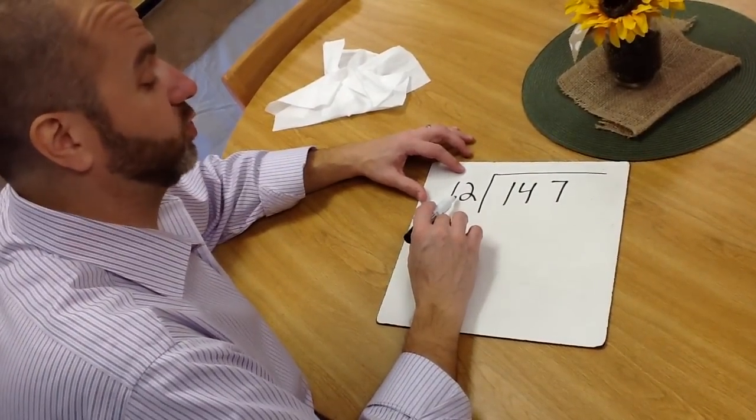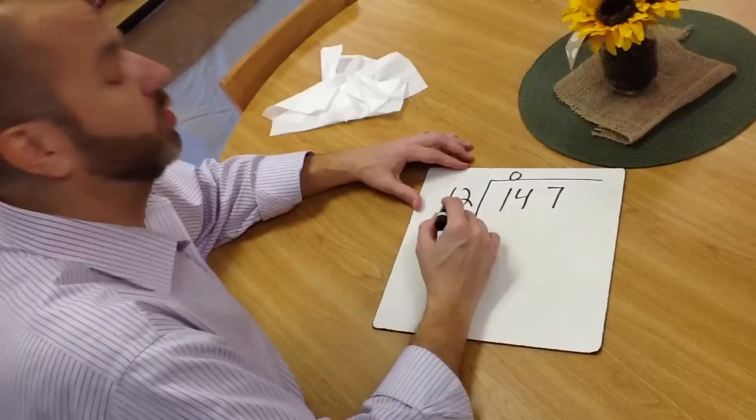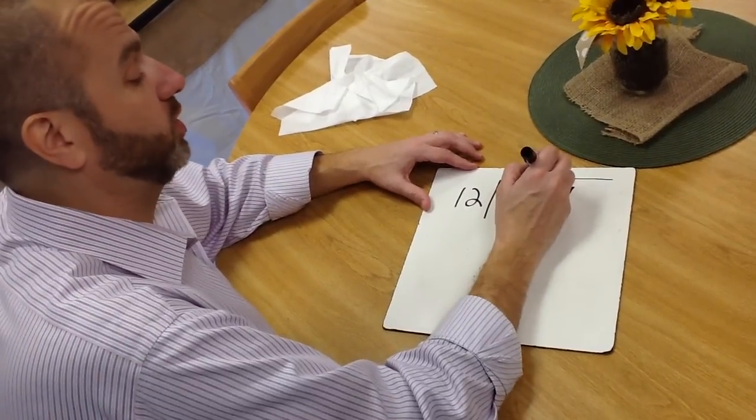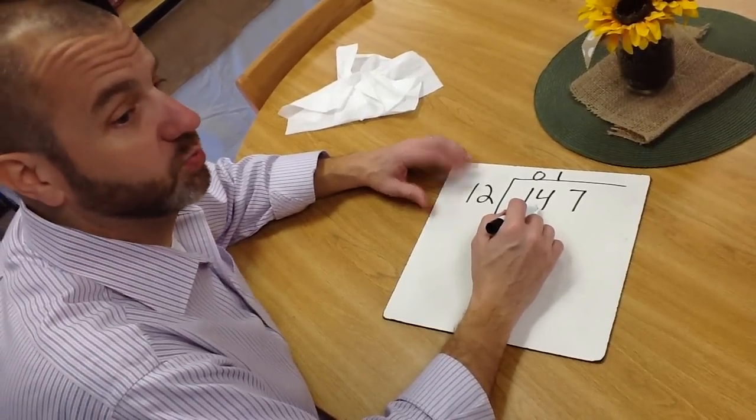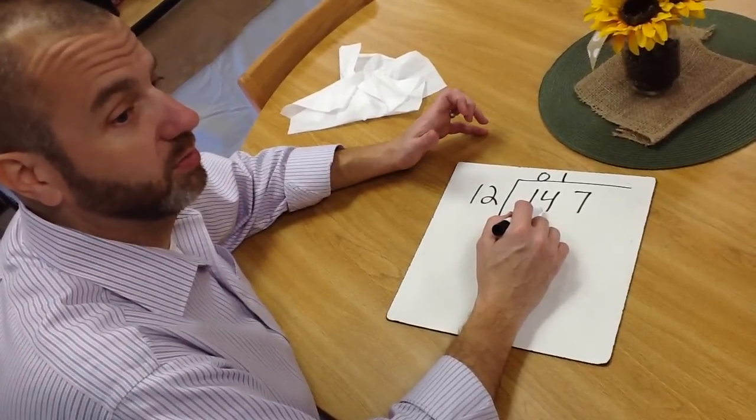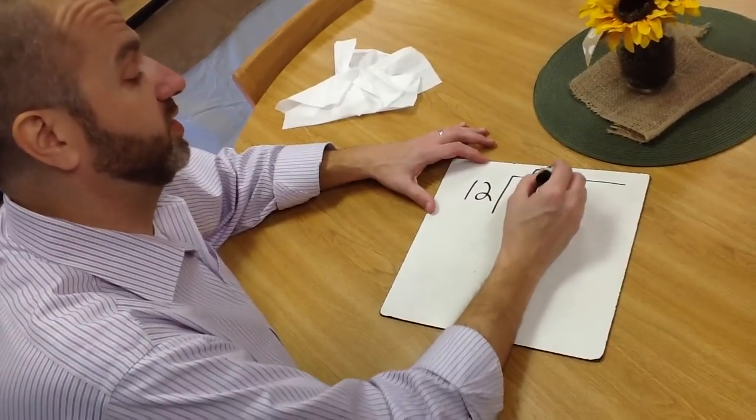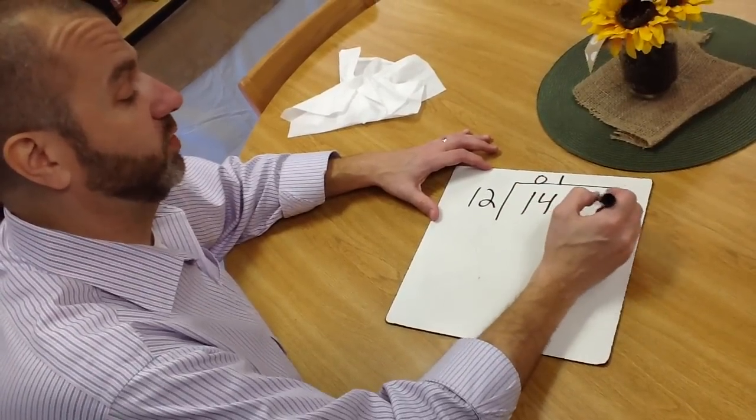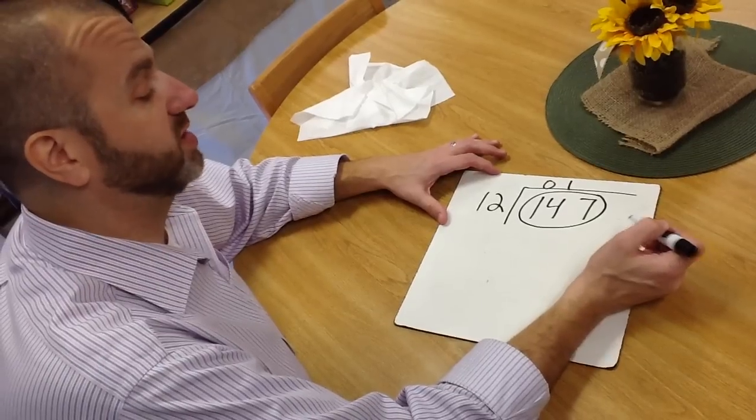The way we were taught is we would say, well, 12 cannot go into 1, and 12 cannot go into, or 12 can go into 14, and it would go one time. The problem with this is we're not teaching kids relationships and patterns with place value. What we're saying is that 12 can go into 14 one time, but we're not dividing into 14, we're actually dividing into 147.